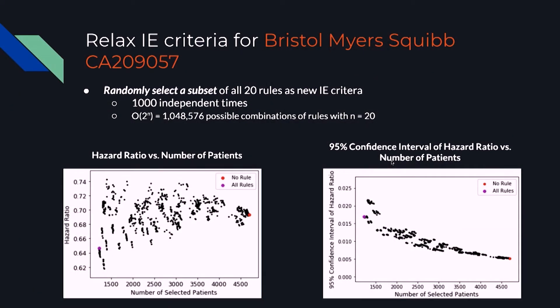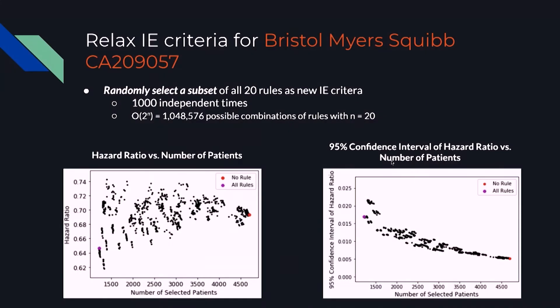We did more analysis. For this particular trial with 20 rules in total, what if we just select a subset of rules? In the graph, each dot indicates one subset of rules. The x-axis is the number of selected patients — ideally you want as many patients as possible. The y-axis is the hazard ratio — ideally you want as small a hazard ratio as possible. So you want more patients and a smaller hazard ratio. That is what we mean by optimization: we can find a good subset where you enroll enough patients but have the best reported hazard ratio.